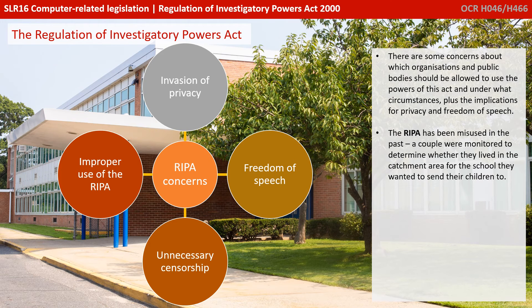Clearly some people have concerns about which organisations and public bodies should be allowed to use the powers of this legislation and under what circumstances, and of course all the implications for privacy and freedom of speech. Indeed, RIPA has been misused in the past. One famous example is when a couple were monitored to determine whether they lived in the catchment area for the school they wanted to send their children to.